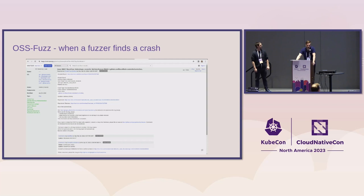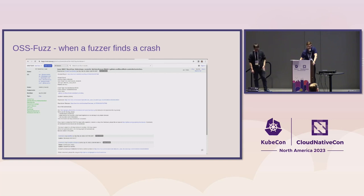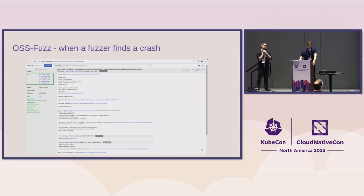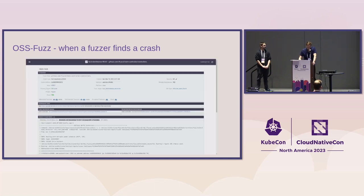What about when a fuzzer finds a crash? That's an important part of why we do fuzzing. When OSS-Fuzz finds a crash by running one of our fuzzers, we get an email with a link to a report. On the left side you see which email addresses received this bug report — these are all defined in the project.yaml file of the OSS-Fuzz integration — and here we have a link to the detailed report.